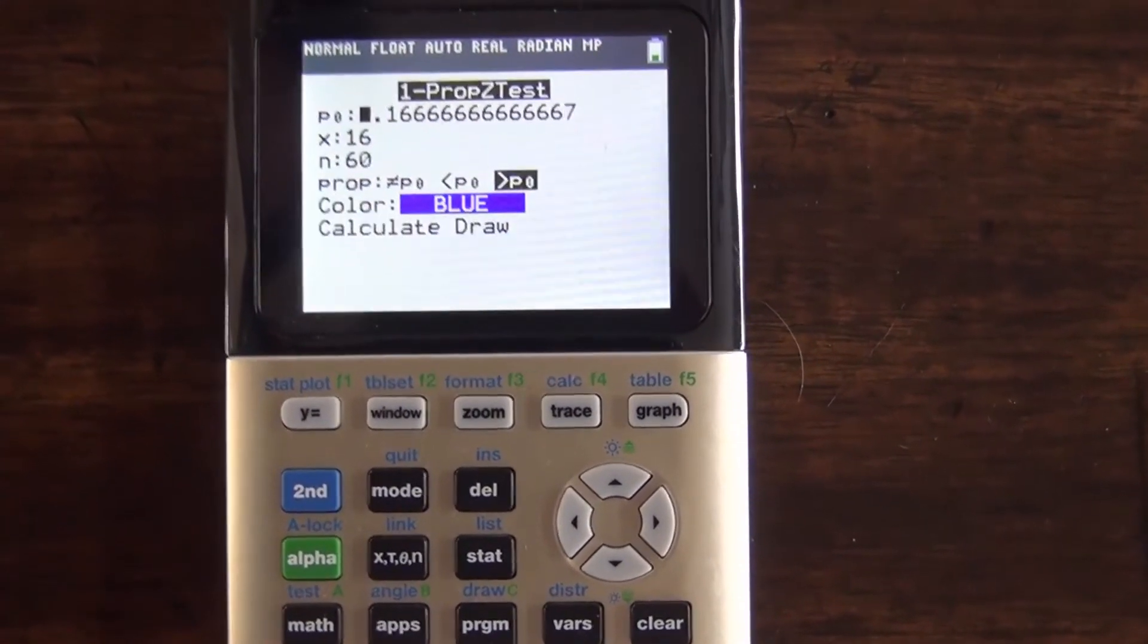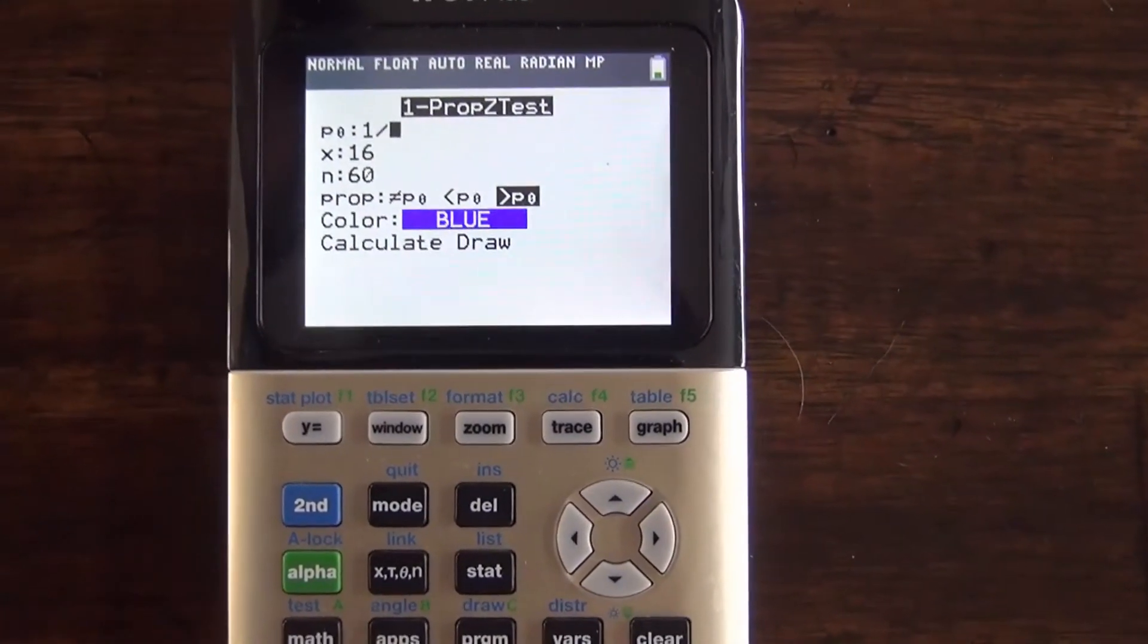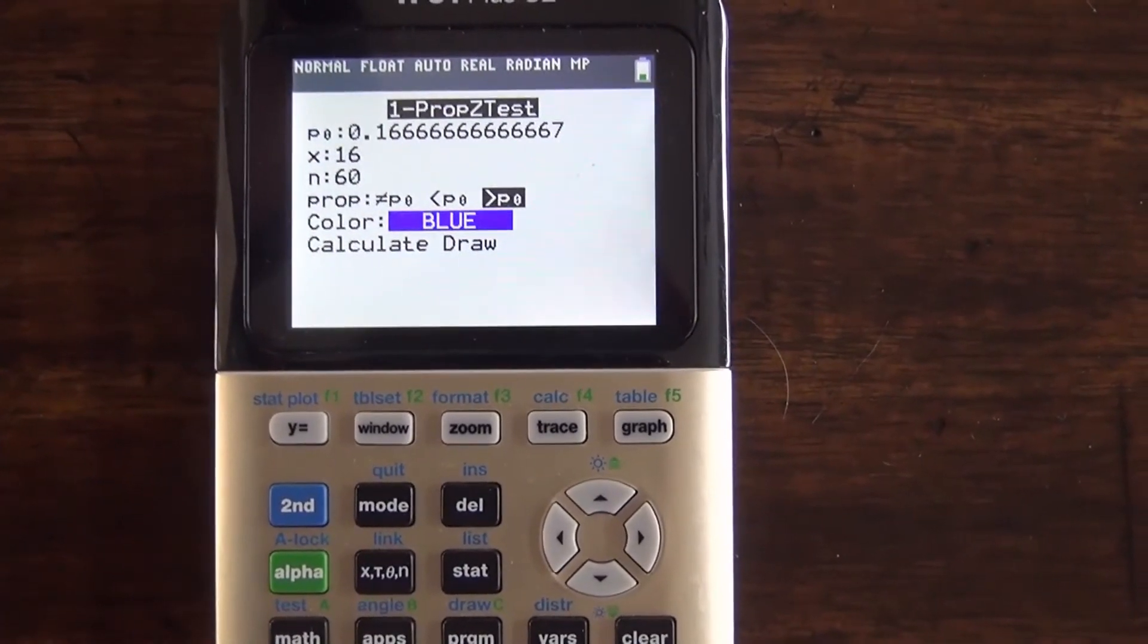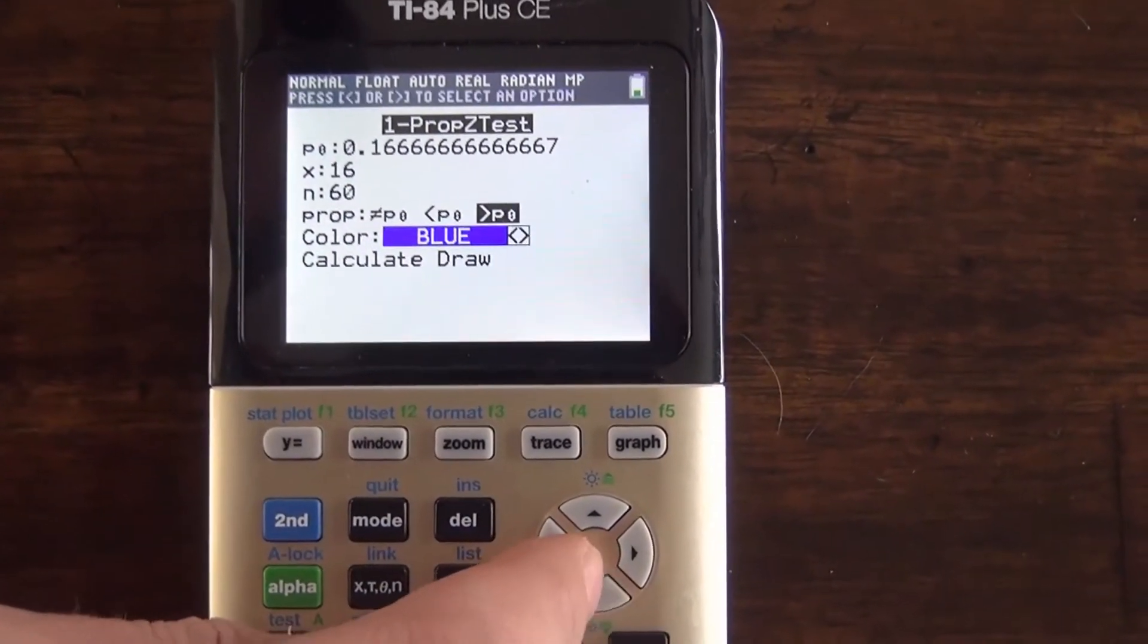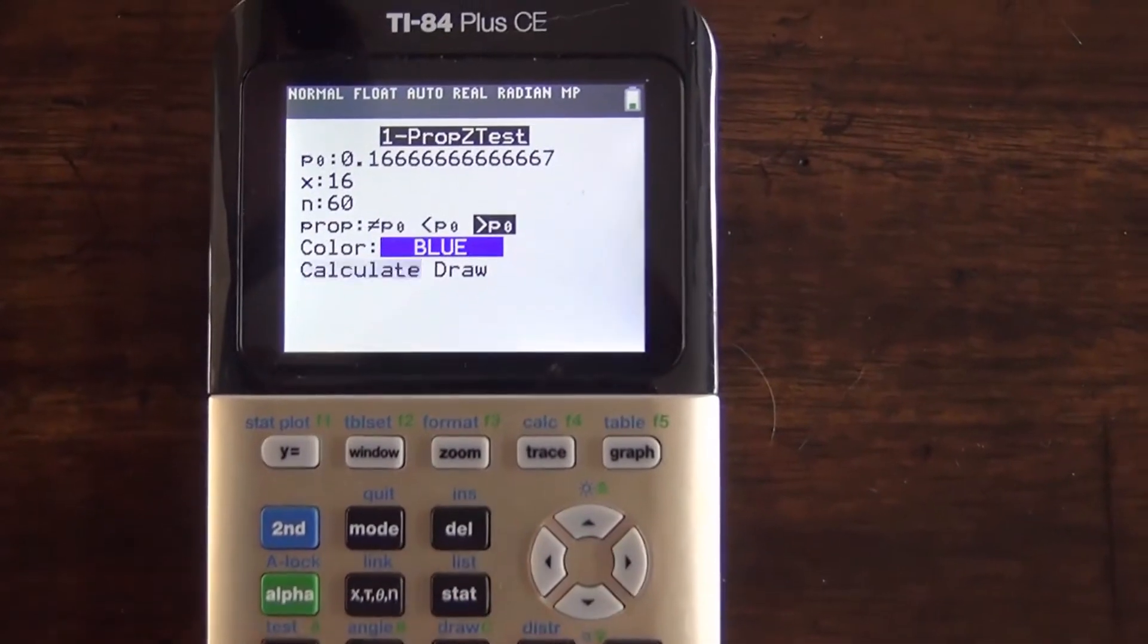Remember to always enter the alternative hypothesis. We're comparing to 1/6, the true proportion of ones on a fair die. We want to make sure the proportion is greater than that p₀ up there.